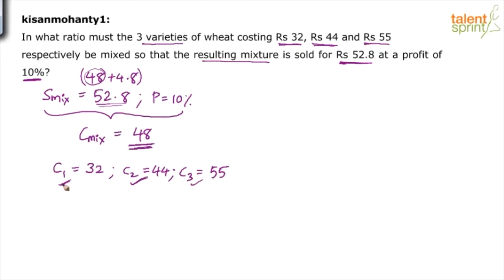We will assume that the first and second varieties are being added in one is to one ratio. Both of them are on the lesser side of 48, so apply to those two. First two varieties are being added in the ratio of 1 is to 1. Find out what will be the mean price for these two, C1 and C2. Apply allegation rule: 32, 44. Let the cost price of the mixture be some n.